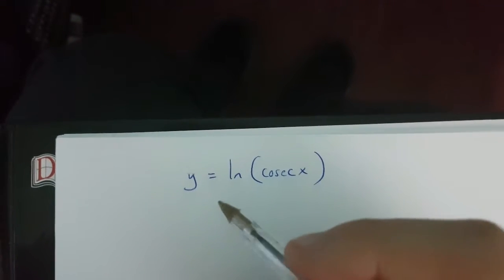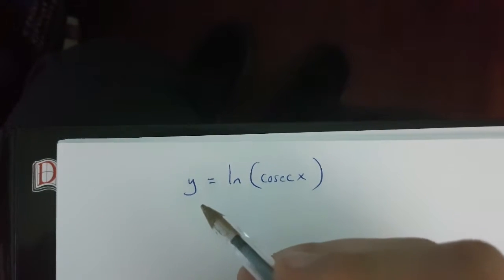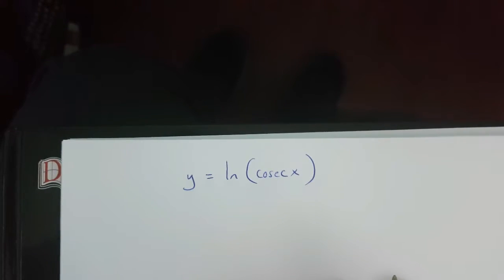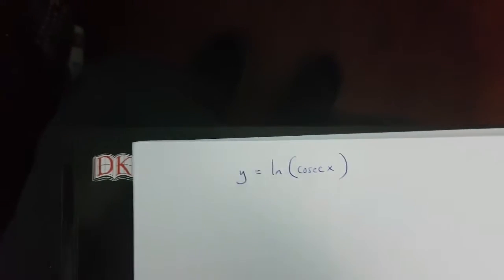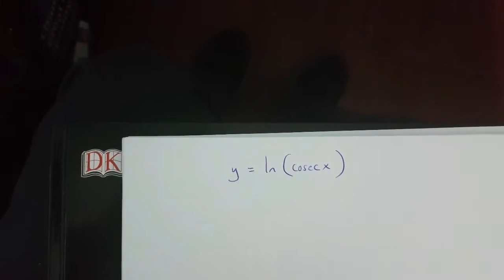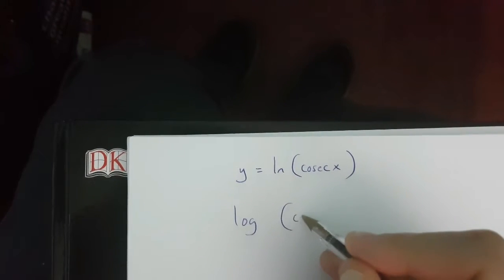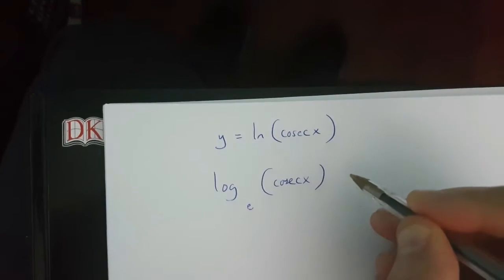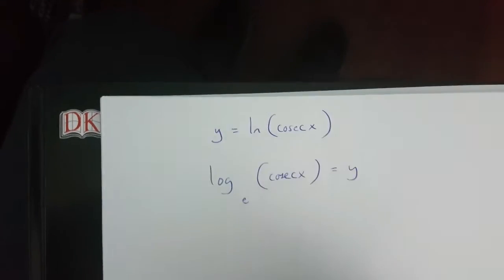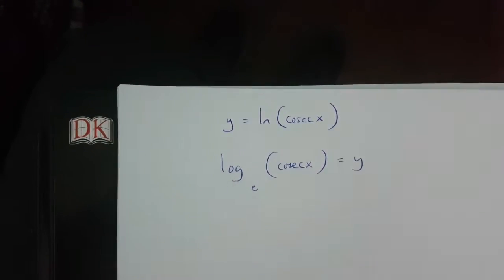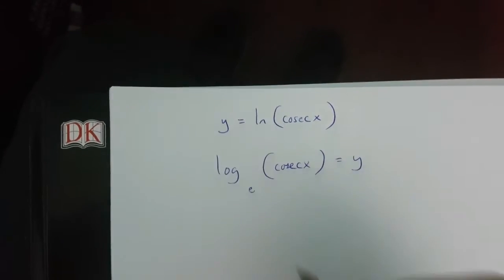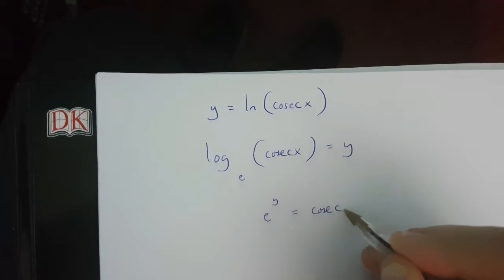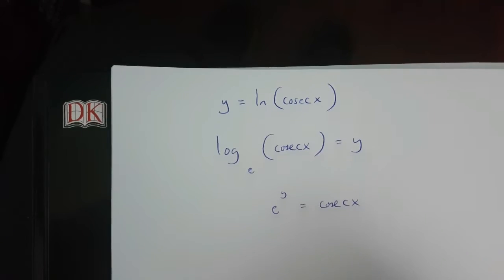In this video I'm going to be showing you how to differentiate y equals ln cosec x using implicit differentiation. I'm first going to start off by saying that log cosec x to the base e is equal to y. If I do this, what I then get is e to the power of y is equal to cosec x.